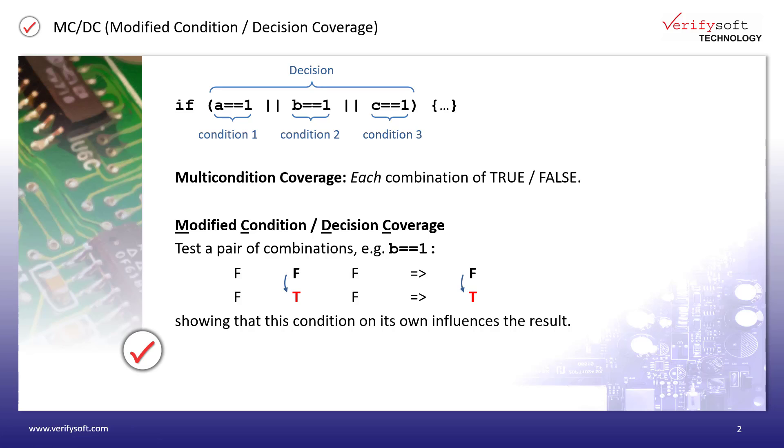Modified condition decision coverage requires also to test all conditions. The idea is that changing a single condition would also change the outcome of the overall decision. In our example here, we focus on the second condition, where we compare B to the value 1.